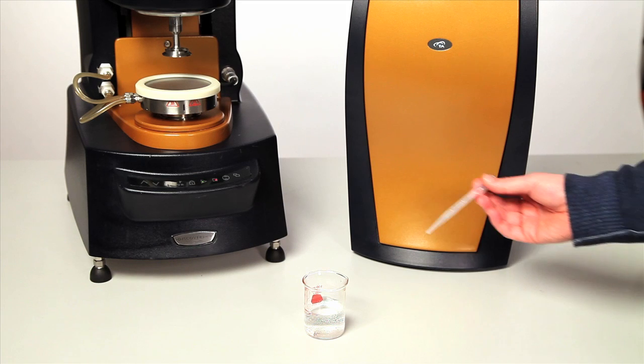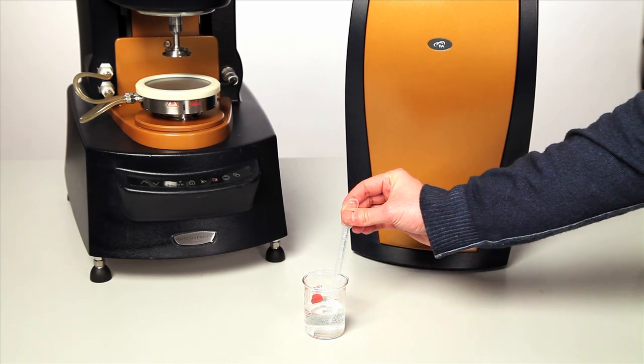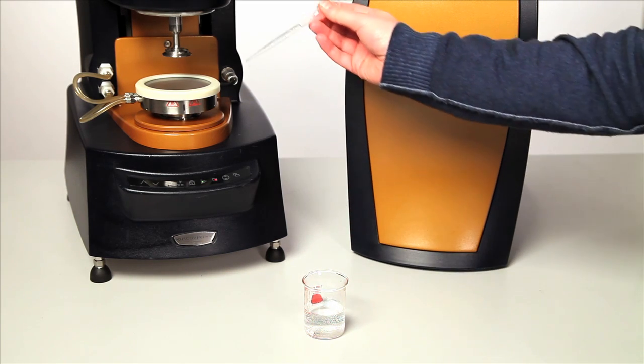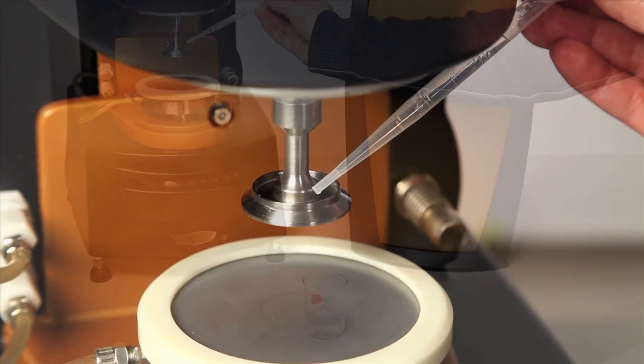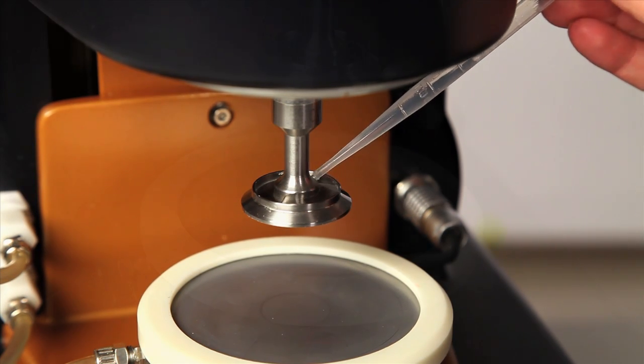Before performing the geometry inertia calibration, it is recommended to fill the well with a proper solvent in order to take the mass of the solvent into account. You can do this with a syringe or a pipette. Make sure the whole surface of the well is covered when you do this.